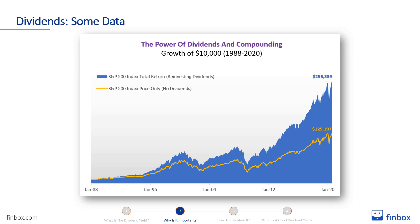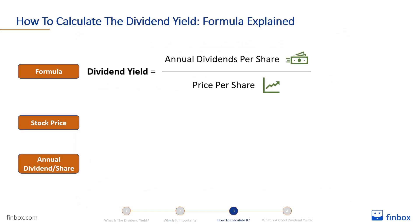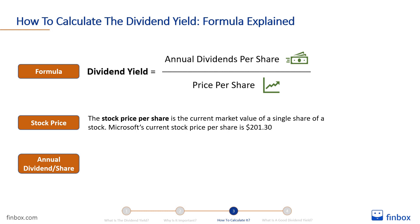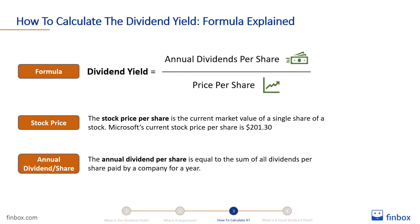The dividend yield is equal to the annualised dividends per share paid by a company divided by the stock price per share. The stock price per share is the current market value of a single share of stock. For example, Microsoft's current stock price per share is $201.30. The annual dividend per share is equal to the sum of all dividends per share paid by a company for a year. There are several ways to calculate it.